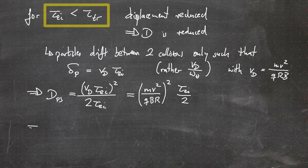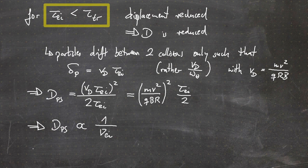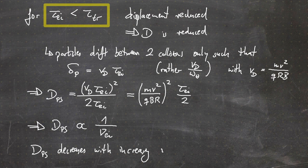Interestingly, this means that the diffusion coefficient scales inversely with the collision frequency. So the diffusion coefficient in this regime decreases with increasing collision frequency between electrons and ions. Plasmas with short collision times are often referred to as collisional plasmas, and in a collisional plasma the diffusion coefficient decreases with increasing collision frequency.